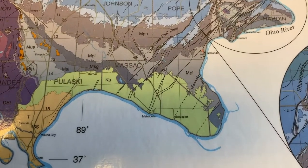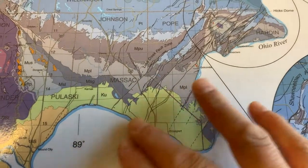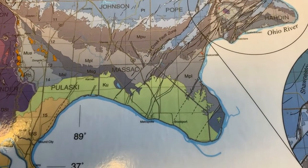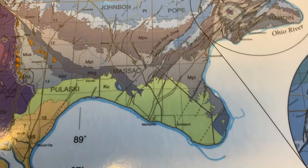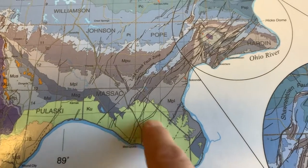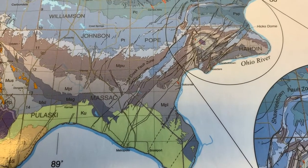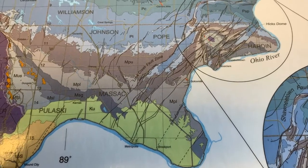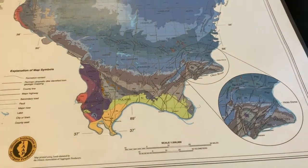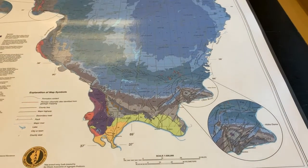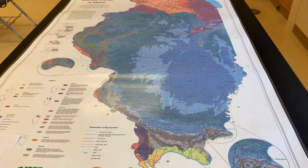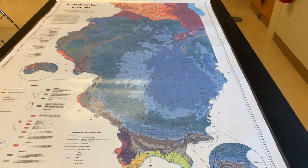This formation had to get laid down before these faults came in, so we know the faults are relatively young — less than 65 million years old. That's how we use faults and rock layers to indicate relative ages of rocks. The relative ages tell us about the history of the Earth and the sequence of events.